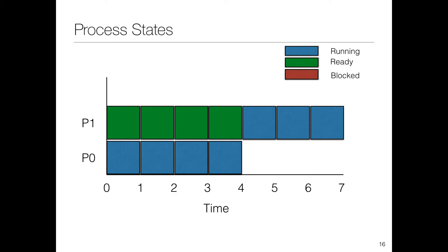Let's take a simple example. We have process 0 and process 1. In the first four cycles, process P0 is running. During that time, while P1 is ready to execute, it cannot execute because the CPU is already occupied by P0. So it remains in the ready state — shown in green. After P0 has ended and the CPU is available, then P1 starts executing. This is a simple example of two processes running in different states.